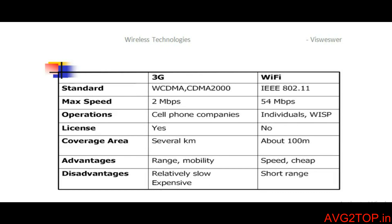3G covers a large area — several kilometers — since a cell phone can access the internet anywhere within the coverage area. Wi-Fi is like an access point placed in one location broadcasting a signal, covering about 100 meters. The advantage of 3G is good range and mobility, while Wi-Fi is cheaper and faster. The disadvantage of 3G is that it is relatively slow and expensive, whereas Wi-Fi works only at short distances.